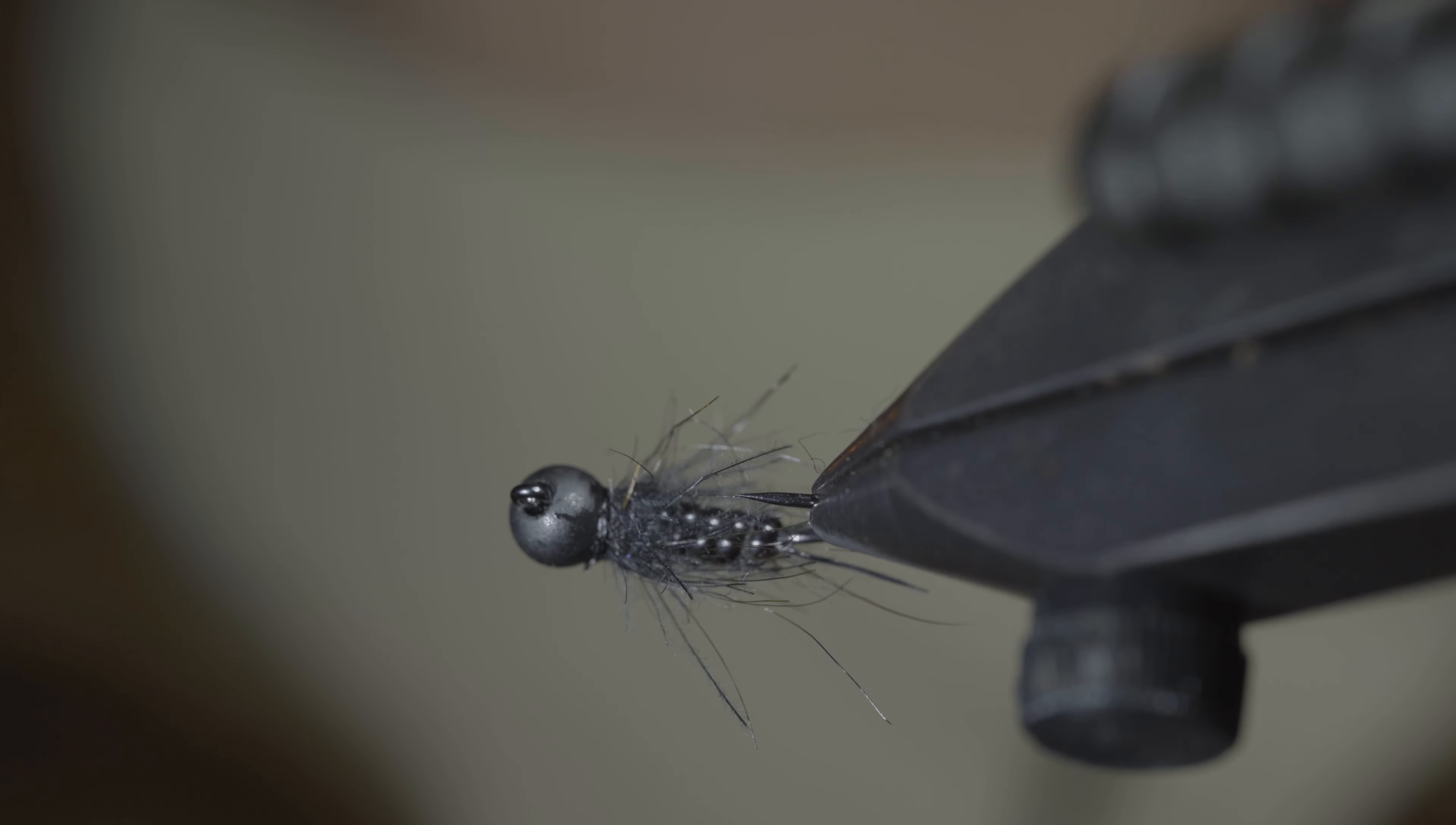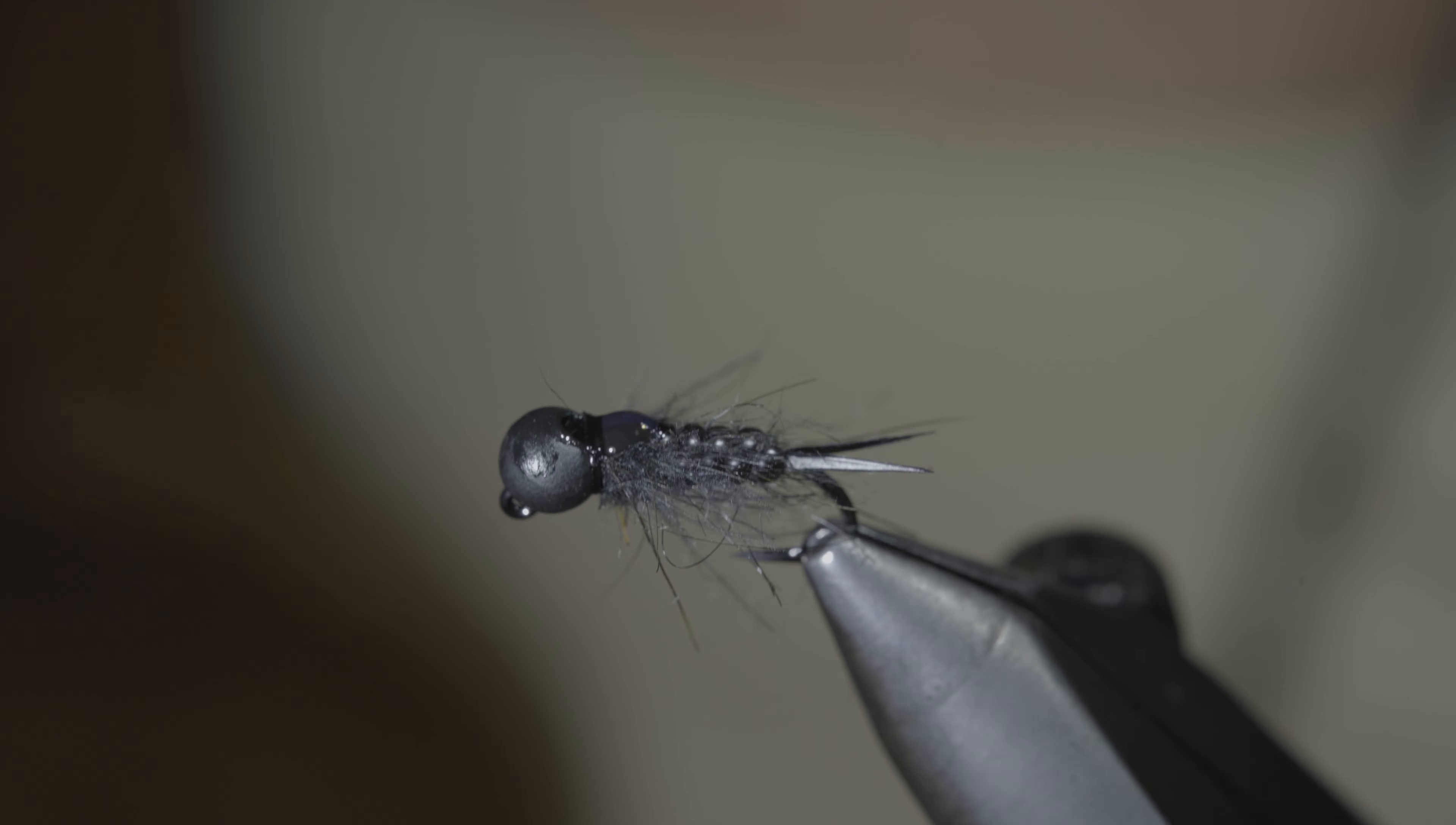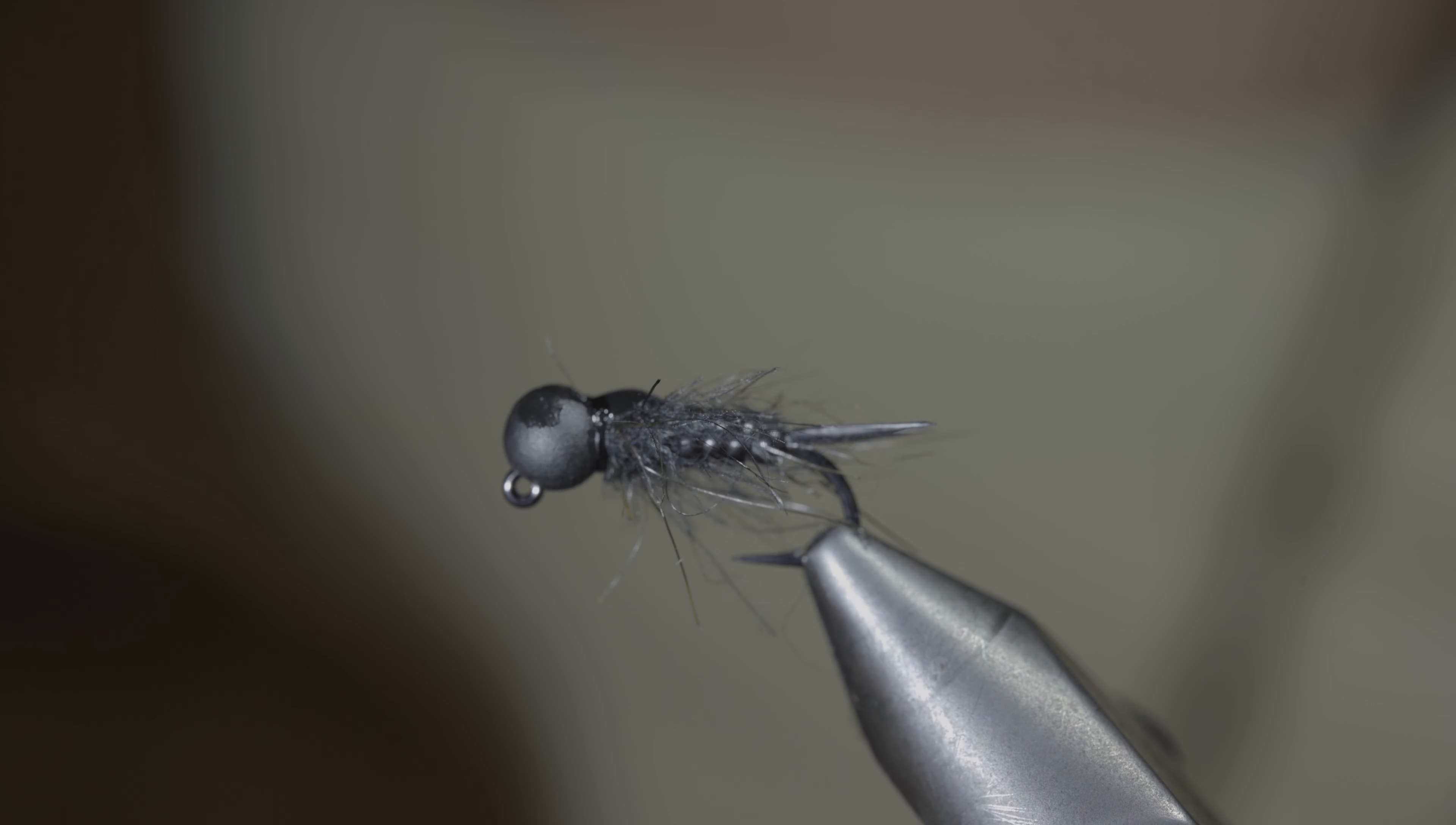And this is a CDC stonefly that I love to use as a dropper to get my point flies down extremely quickly. In addition to getting your point fly in front of fish, this small stonefly offers a great profile and an extremely buggy look.